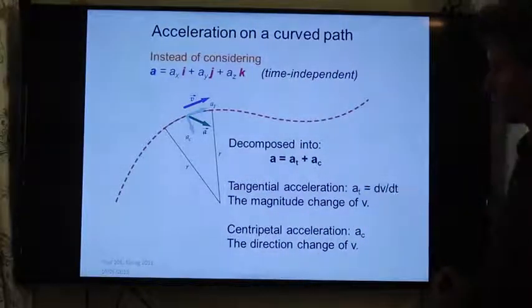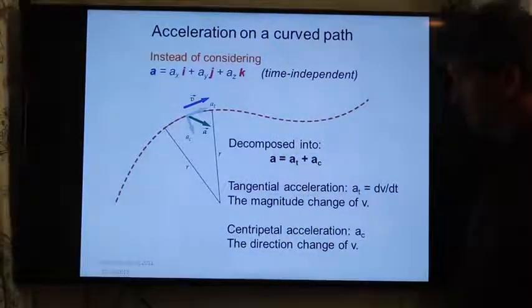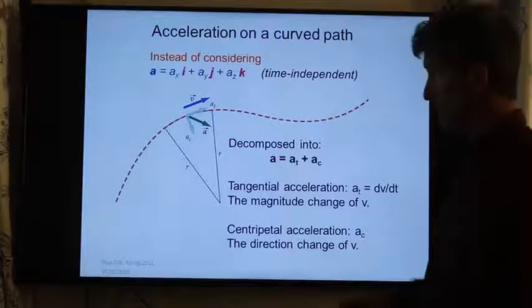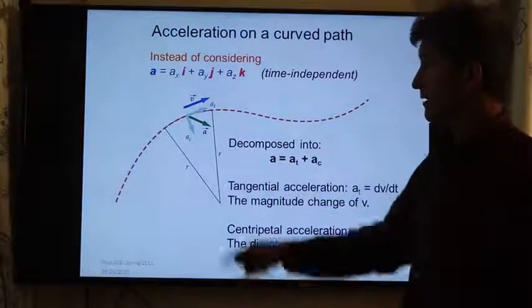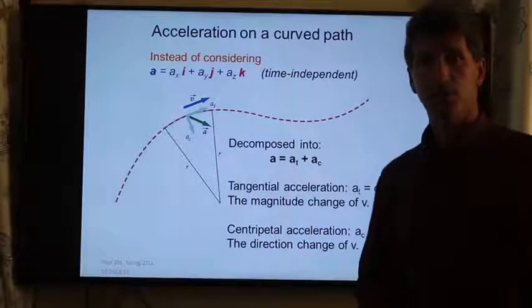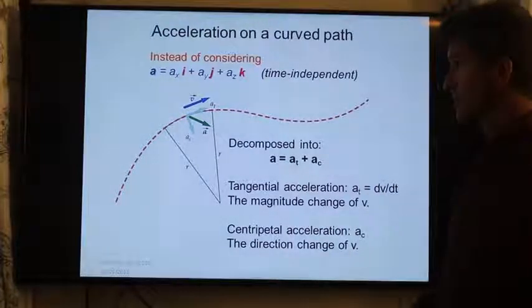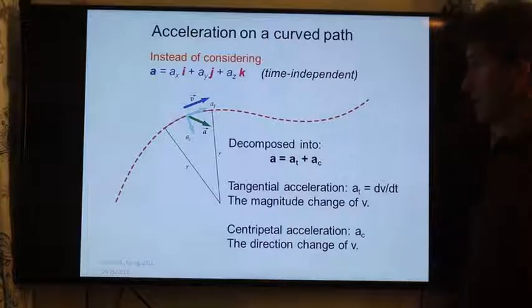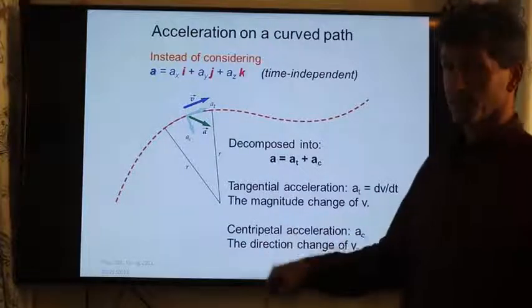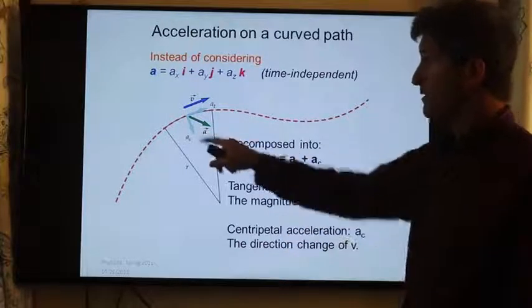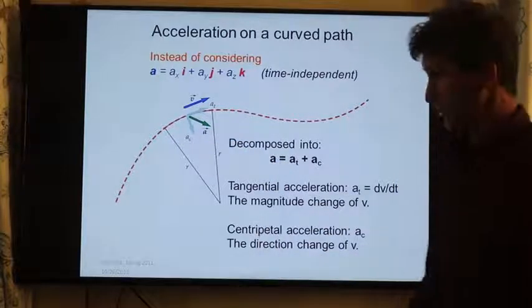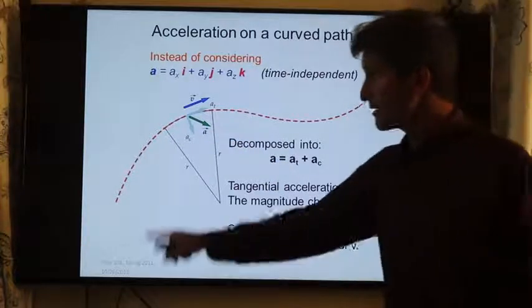So if we look at an object traveling along this dotted line, it has two components to the acceleration. It has a transverse acceleration which contributes to the speed, it's in the same direction as the velocity or parallel to that, so it would cause it to speed up or slow down. And the centripetal acceleration, which surprisingly causes the path to curve.